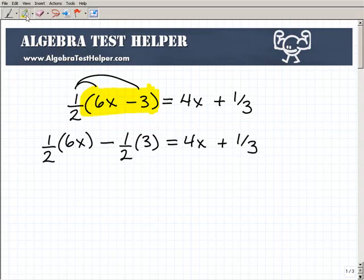Okay. So no big deal. But now, once again, I'm assuming that you know how to multiply fractions. So what's 1 half times 6x? All right. So this is nothing more than a fraction 1 half times 6 over 1 times x. So 1 half times 6 is, of course, going to be 3x. So I'll write that here. Minus 1 half times 3 or 3 over 1 is nothing but 3 halves. So 3x minus 3 halves equals 4x plus 1 third.